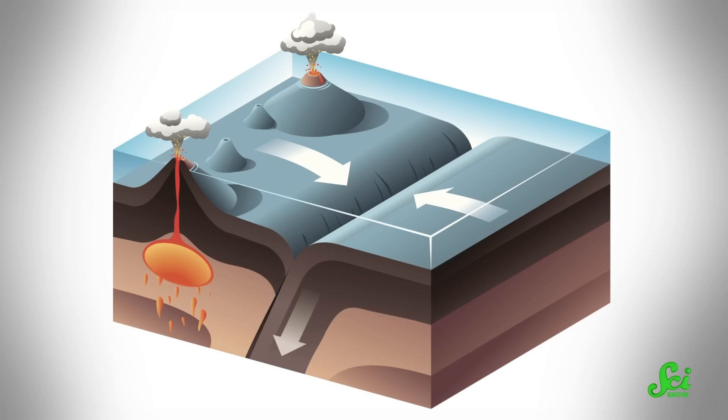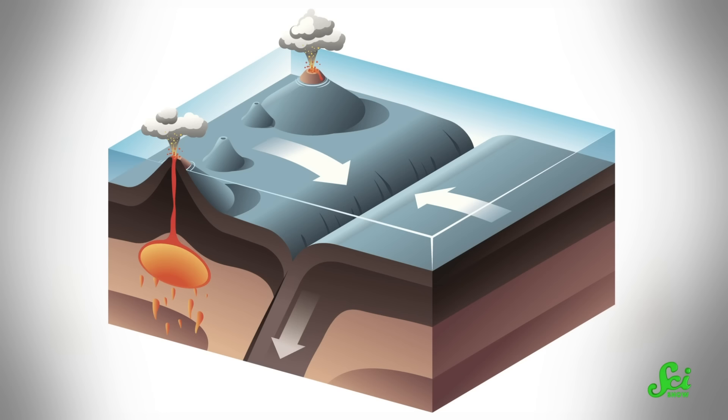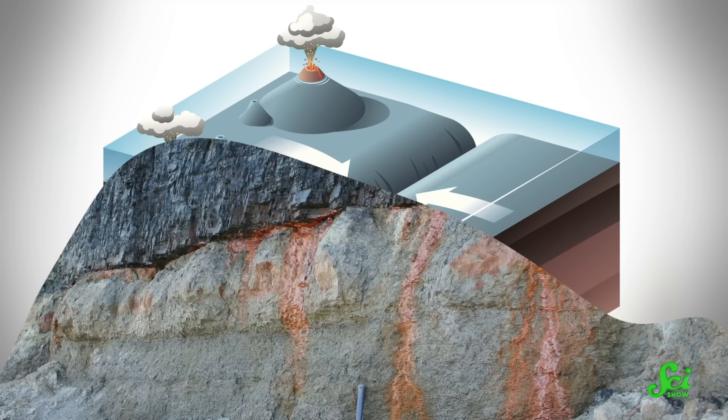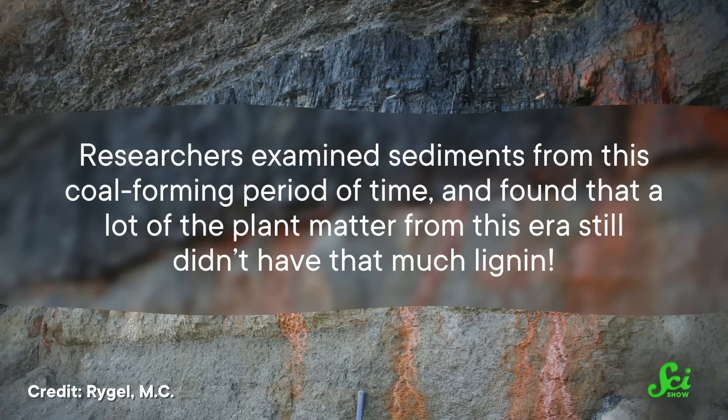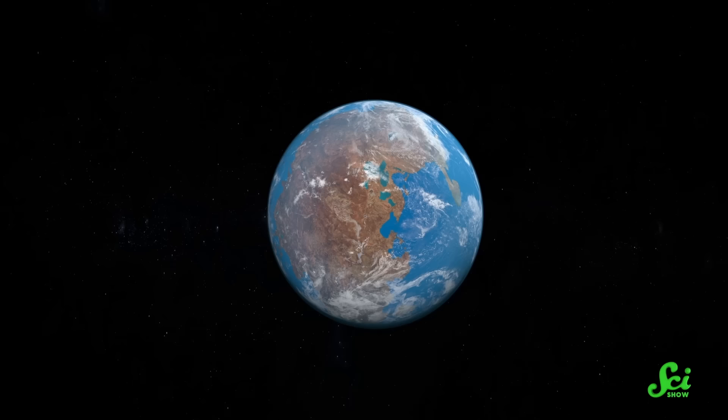But in 2016, researchers instead proposed that tectonic plate movement was more likely the influence on coal formation. They examined sediments from this coal-forming period of time and found that a lot of the plant matter from this era still didn't have that much lignin. And there was a ton of geologic activity at that time, moving around landmasses that would eventually combine into what we know as Pangaea.